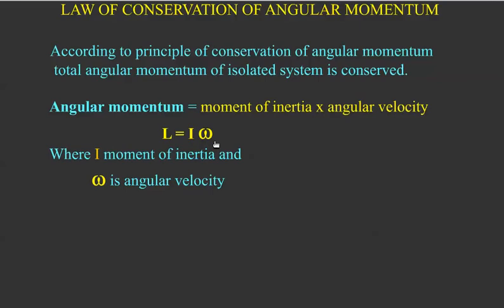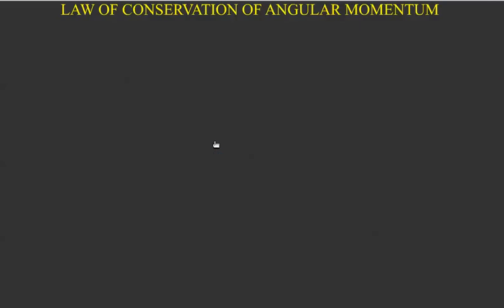In this experiment we take a hollow pen and a thread is passed through it. At this end a bob is attached. Now for different positions the angular velocity is different. Let us consider a position like this and observe the speed.